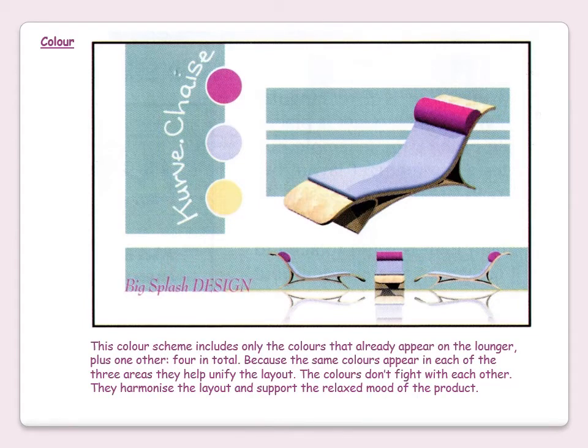In this second example, the colour scheme includes only the colours that already appear on the lounger plus one other — four in total. Because the same colours appear in each of the three areas, they help to unify the layout. The colours don't fight with each other. They harmonise the layout and support the relaxed mood of the product. The pale blue in the background is repeated in every area, and the only other colours are the purple, brown and pale blue already in the lounger.